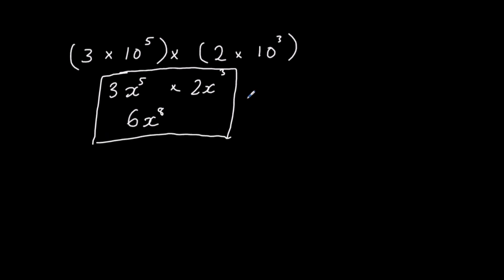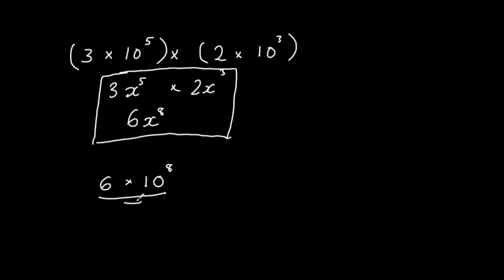So it's the same thing in standard form. We've got 3 times 2 which makes 6, and we've got 10 to the power of 5 multiplied by 10 to the power of 3, and that's 10 to the power of 8. And that's the answer.